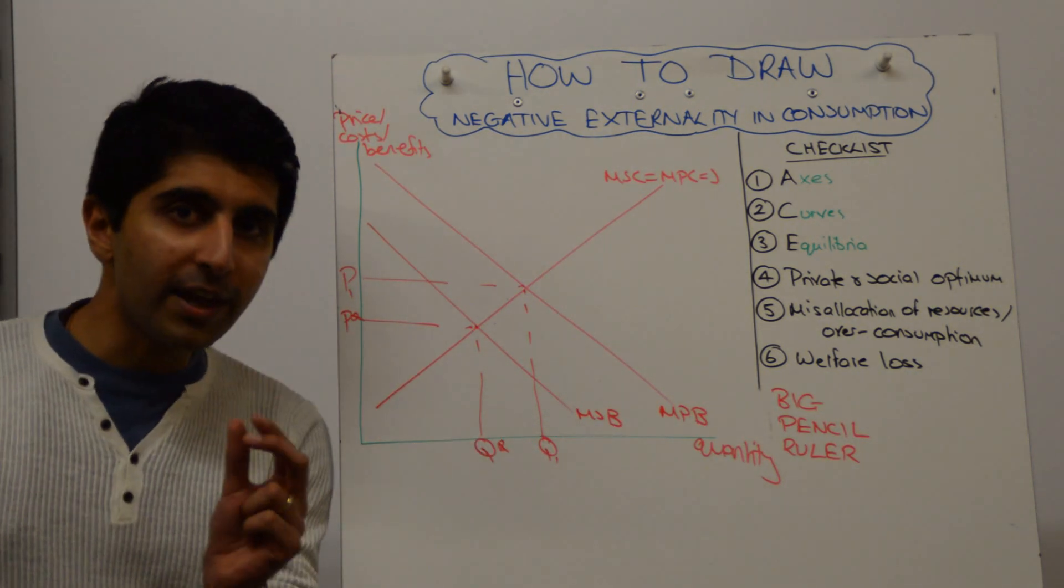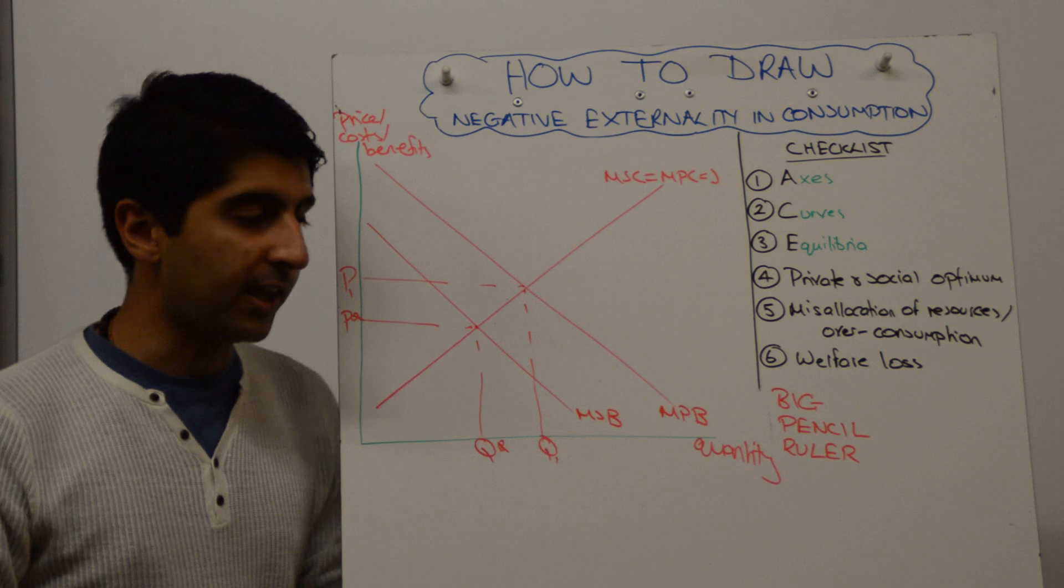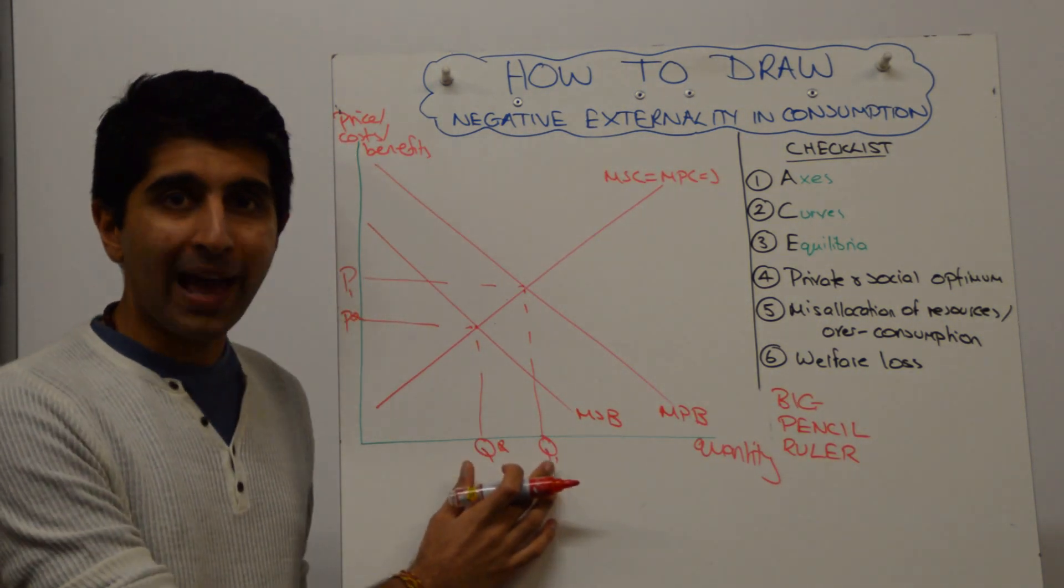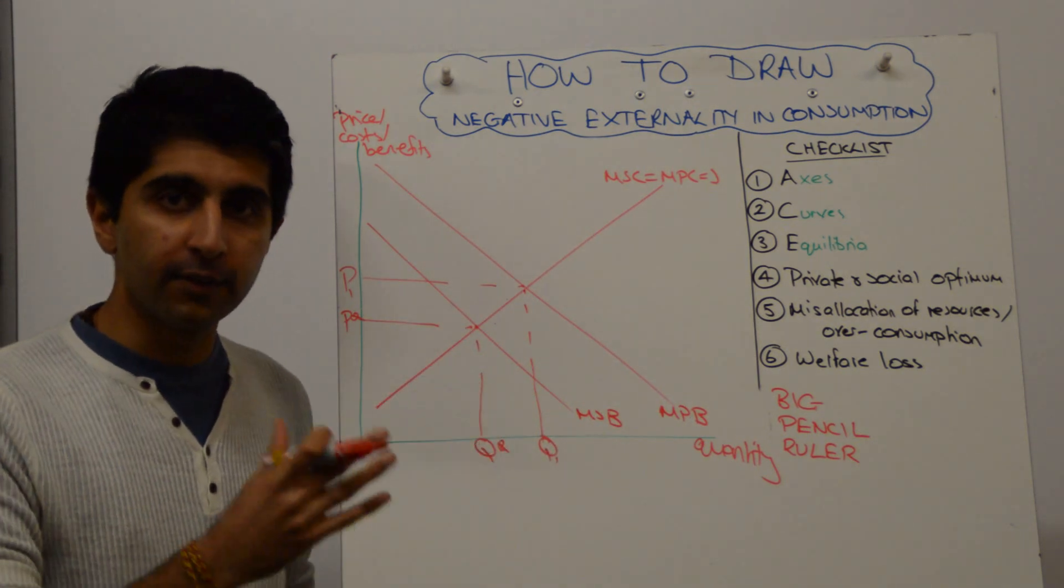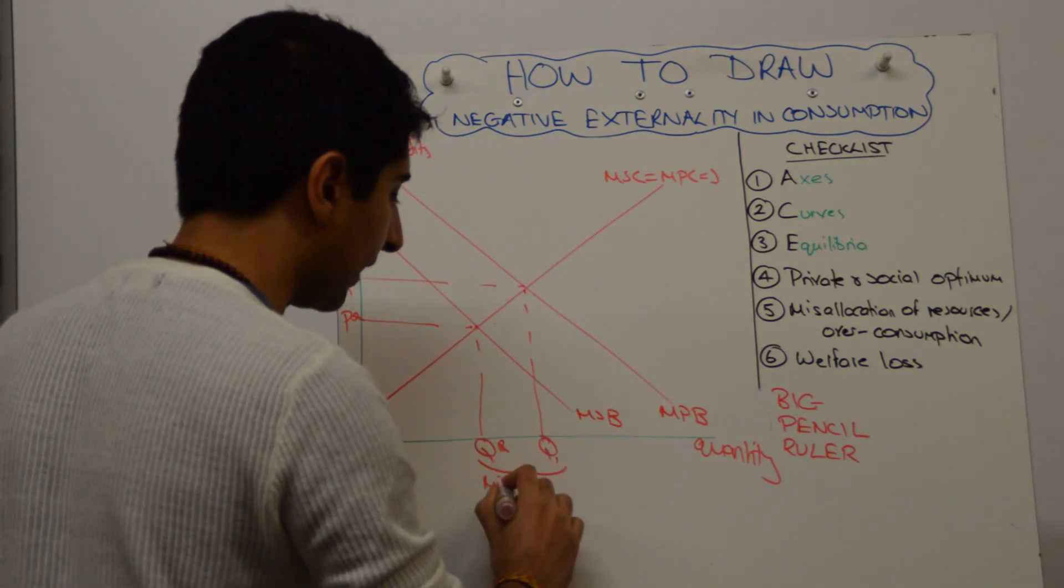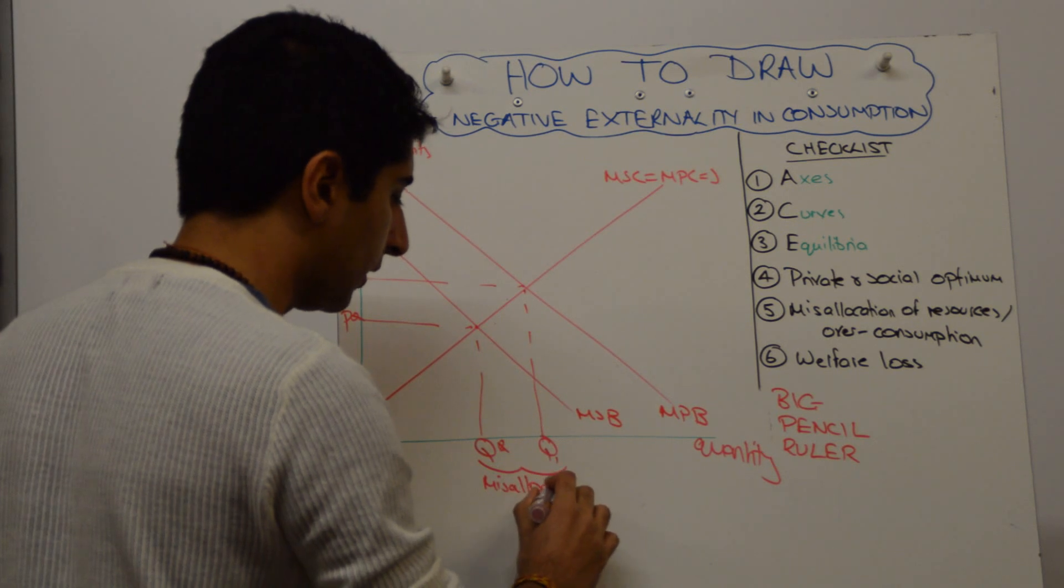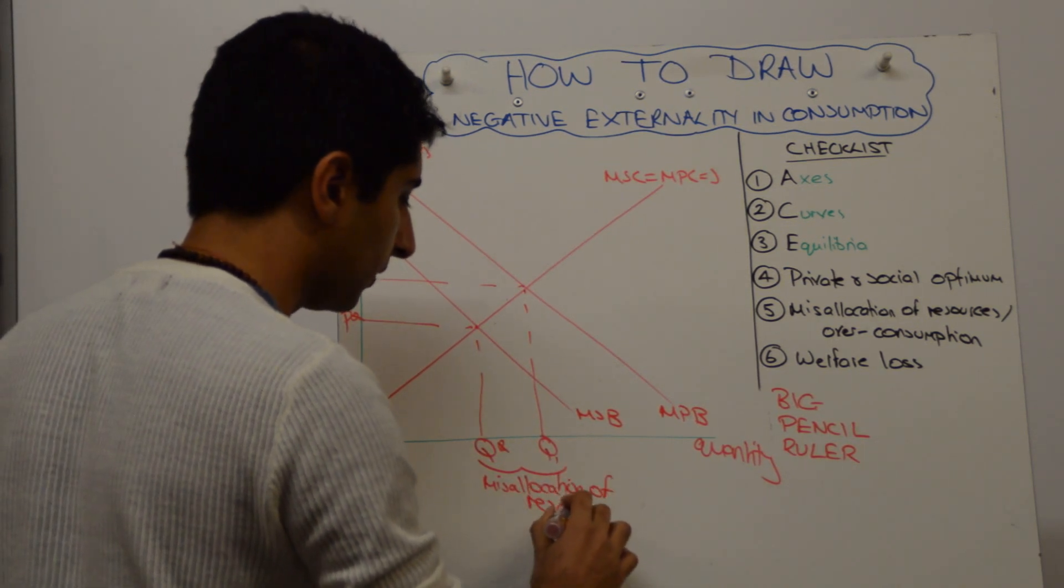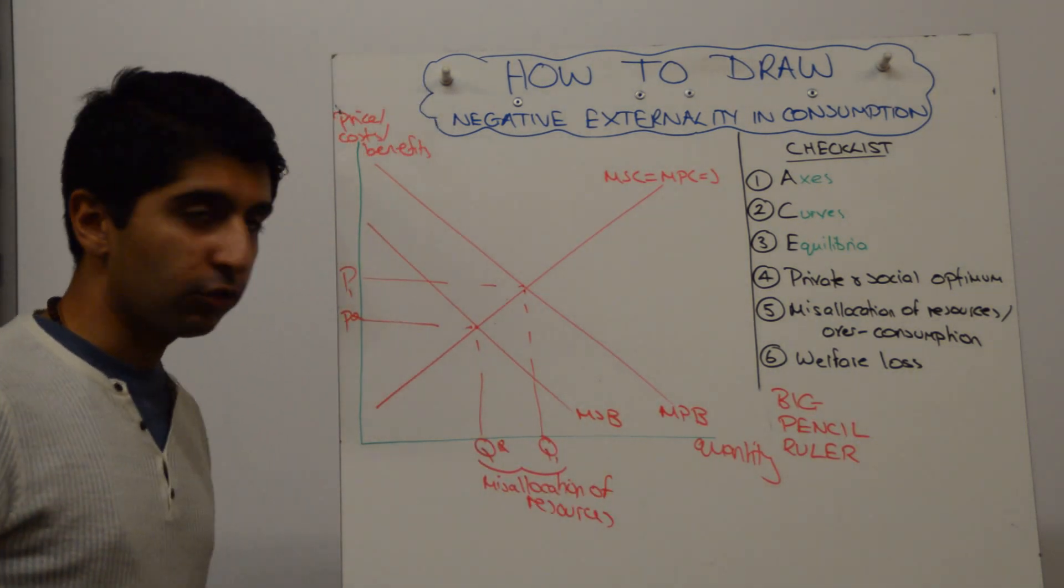Show the examiner you know there is a market failure here. That there is an overconsumption going on. Too many resources are allocated to this good or service than society desires. Show the examiner that you know that this is a misallocation of resources. That's always a nice extra touch. A lovely extra touch there.